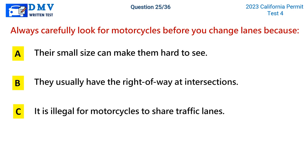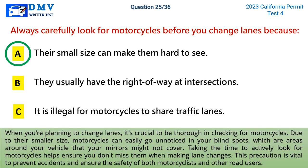Question 25: Always carefully look for motorcycles before you change lanes because. A) their small size can make them hard to see, B) they usually have the right of way at intersections, C) it is illegal for motorcycles to share traffic lanes. The correct answer is A. When planning to change lanes, be thorough in checking for motorcycles. Due to their smaller size, motorcycles can easily go unnoticed in your blind spots — areas around your vehicle that your mirrors might not cover. Actively looking for motorcycles helps prevent accidents and ensures the safety of both motorcyclists and other road users.